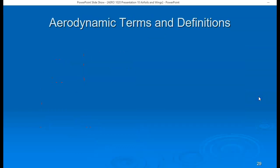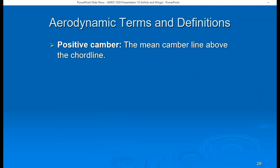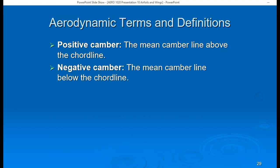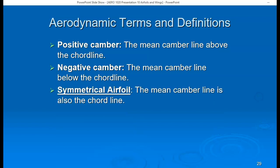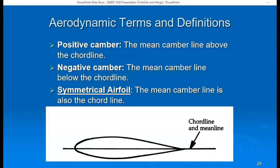Let's look at additional aerodynamic terms. Positive camber is when the mean camber line is above the cord line. Negative camber is when the mean camber line is below the cord line. A symmetrical airfoil is when the mean camber line is the same as the cord line — the curvature on top of the airfoil is the same as on the bottom. On a symmetric airfoil, the mean camber line is coincident with the cord line.